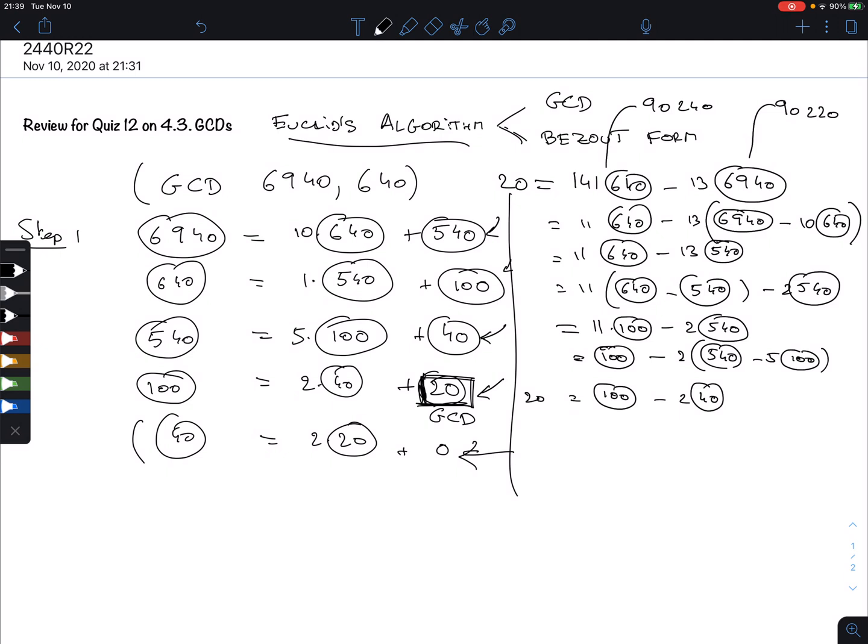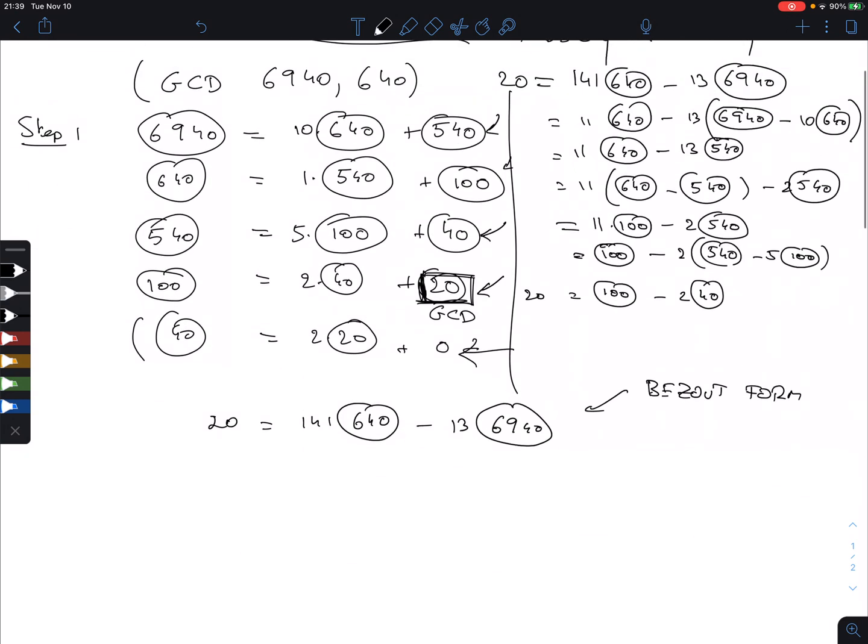That is what I want you to do here. I'll write the answer again: 20 equals 141 times 640 minus 13 times 6940. This is the Bézout form. When we write it down, we don't actually circle the numbers anymore. This was step 2 when we started working back upwards.